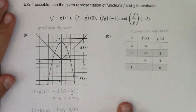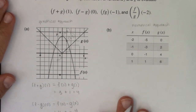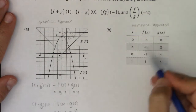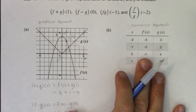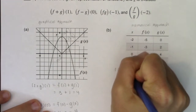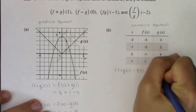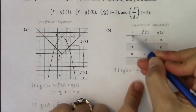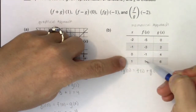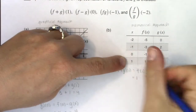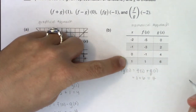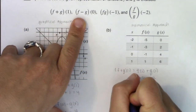That was the graphical approach — we got all the y values from the graph. Now I want the numerical approach where I get all my y values from a table. I've got no functions to plug into and no graphs, just tables of numbers. Let's calculate all four quantities. The first one is f plus g of one, so that's f of one plus g of one. My x coordinate is one — when x is one, f of x equals one and g of x equals six, so this becomes one plus six, which is seven.